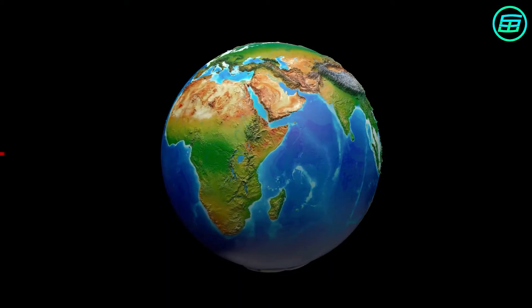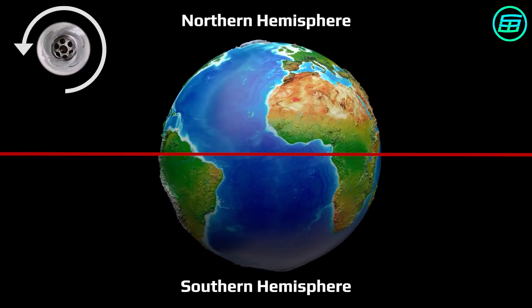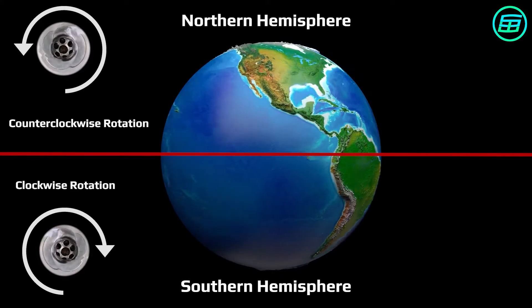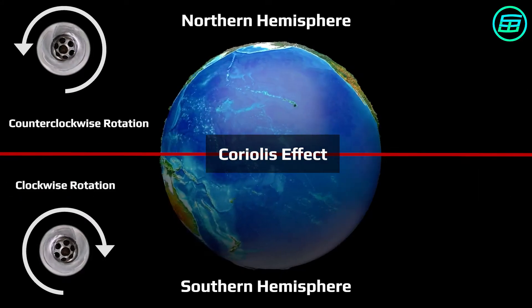According to theory, the water should swirl in the opposite sense in the two hemispheres because of the Coriolis effect.